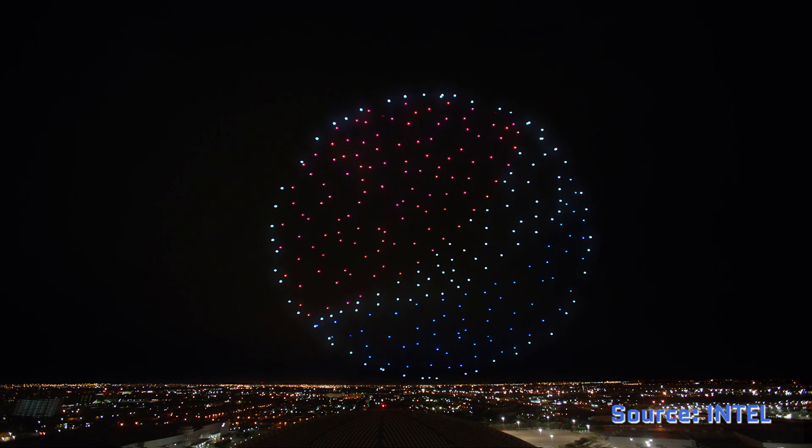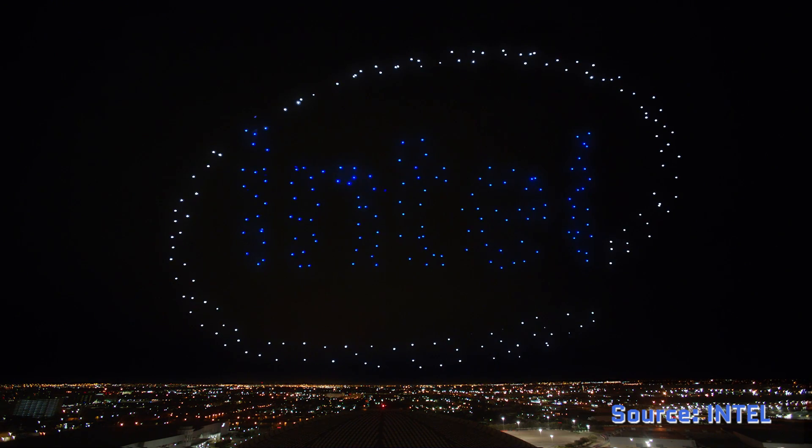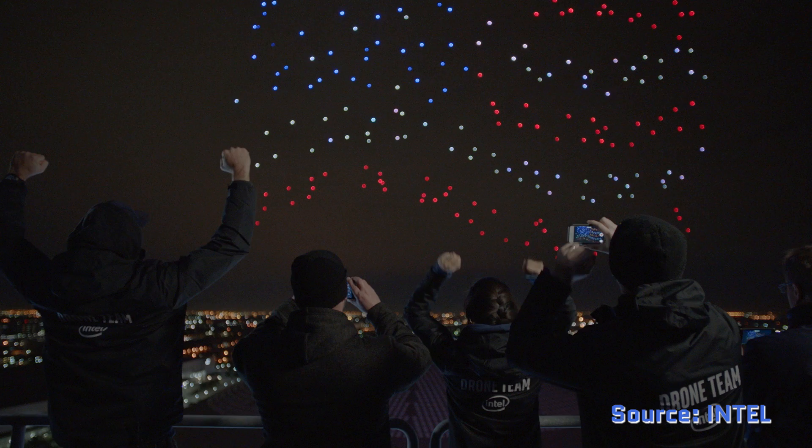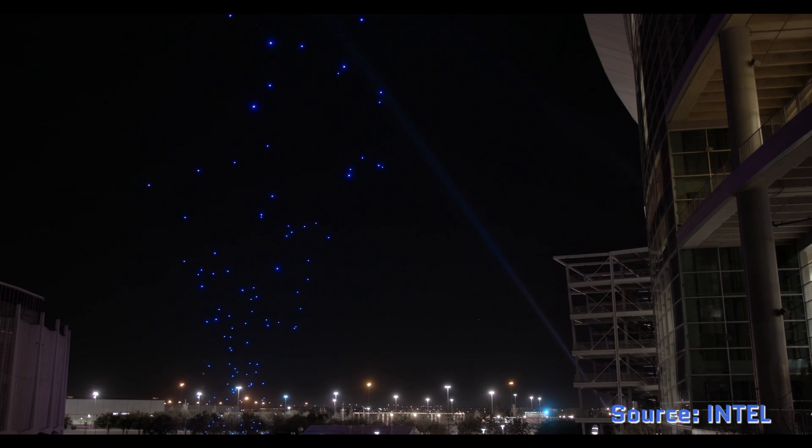If you watched the 2017 Super Bowl halftime show, you might remember the dazzling image of the American flag hanging above the stadium. Each light making up that image came from a drone flying in a specific configuration to create the effect.